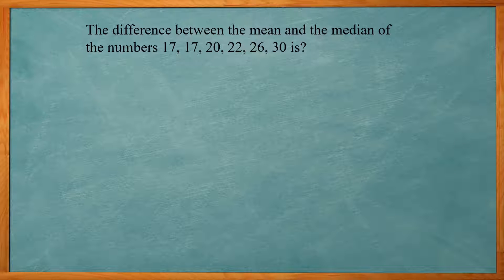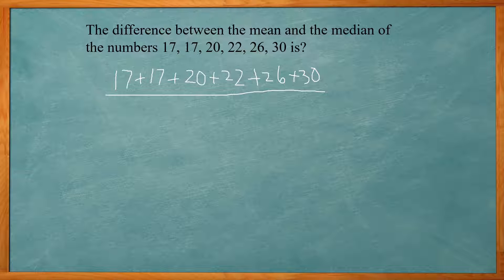All right, so for our first problem, it asks, the difference between the mean and the median of the numbers 17, 17, 20, 22, 26, and 30 is? So to find our mean, what do we do? We add up all the numbers that we have and divide by how many they are. So I'm going to take 17 plus 17 plus 20 plus 22 plus 26 plus 30. And then divide it by, we have 1, 2, 3, 4, 5, 6 numbers. All right, so the top becomes 132 divided by 6. That's going to give us 22 for the mean.